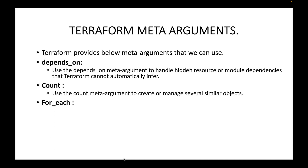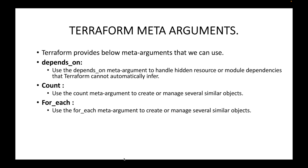Then we have the for_each meta argument. This also can be used to manage several similar objects. However, if you want to launch 10 instances but each of these instances uses a different configuration — maybe a different AMI or different instance type — then we can make use of the for_each meta argument.